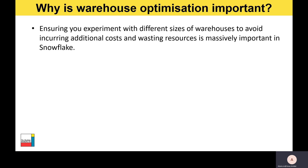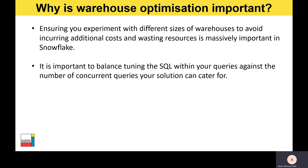It's really important that you experiment with different sizes of warehouses up front to avoid incurring additional charges and wasting resources. It's crucial to balance tuning the SQL within your queries against the number of concurrent queries your solution can cater for. That means there's a trade-off between optimizing each individual query versus scaling up your warehouse to provide more resources, or scaling out with a multi-cluster warehouse for greater throughput and concurrency. Taking one approach isn't always best — sometimes it may be one or the other, sometimes a combination of both, depending on the problem.